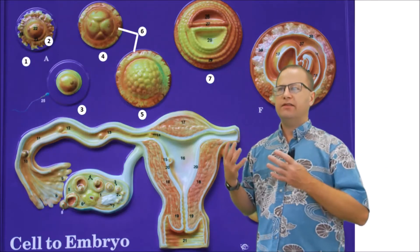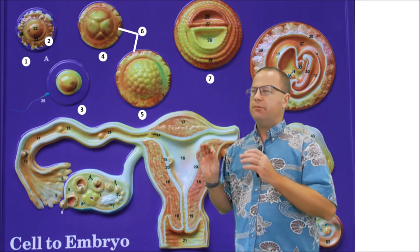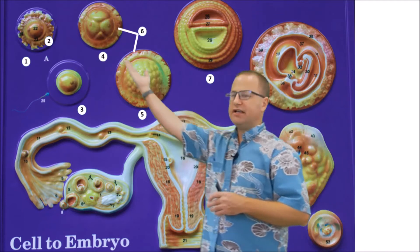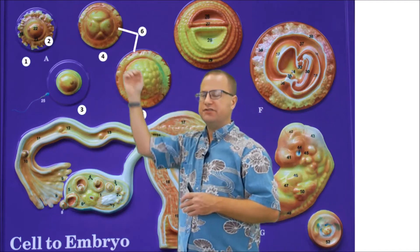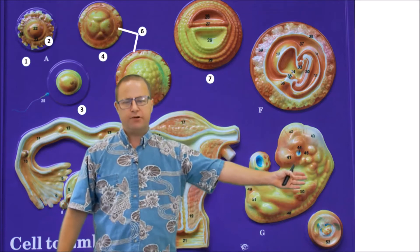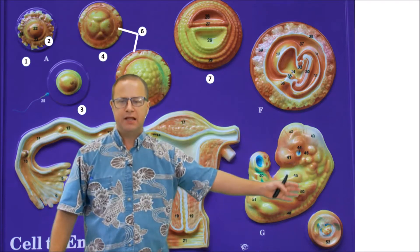First we're going to start out and talk about the process of embryogenesis. Embryogenesis is the process where we take a secondary oocyte, which you can see up top, and eventually end up with something like a 28-day embryo, like you can see down here on bottom right. So let's go through those steps.